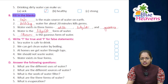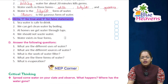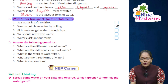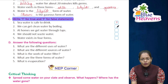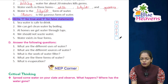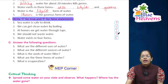Now let's do exercise C — write T for true and F for false. Sea water is safe for drinking — no, it is saline water, so it is false. We can get clean water by boiling — yes, it is true. At home we get water through taps — yes, it is true. We should not waste water — yes, it is true. Water exists in four forms — no, it exists in three forms, so it is false.